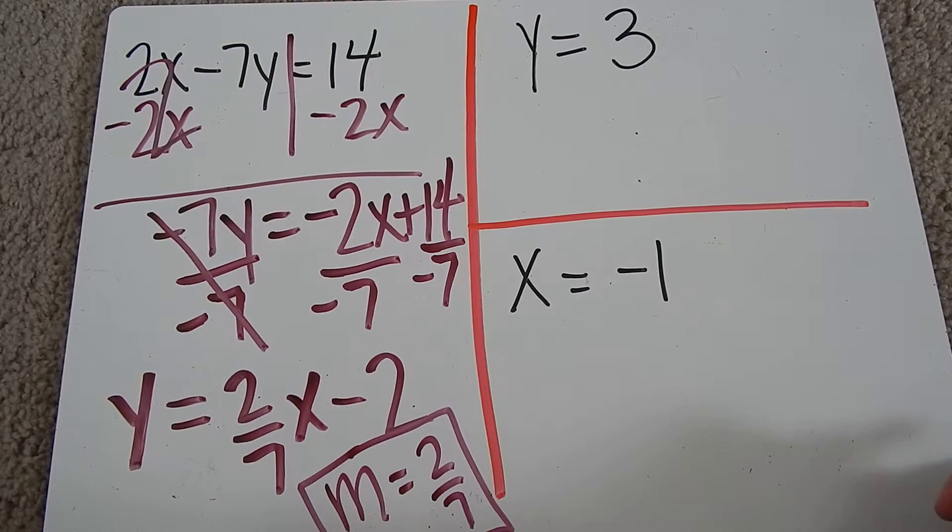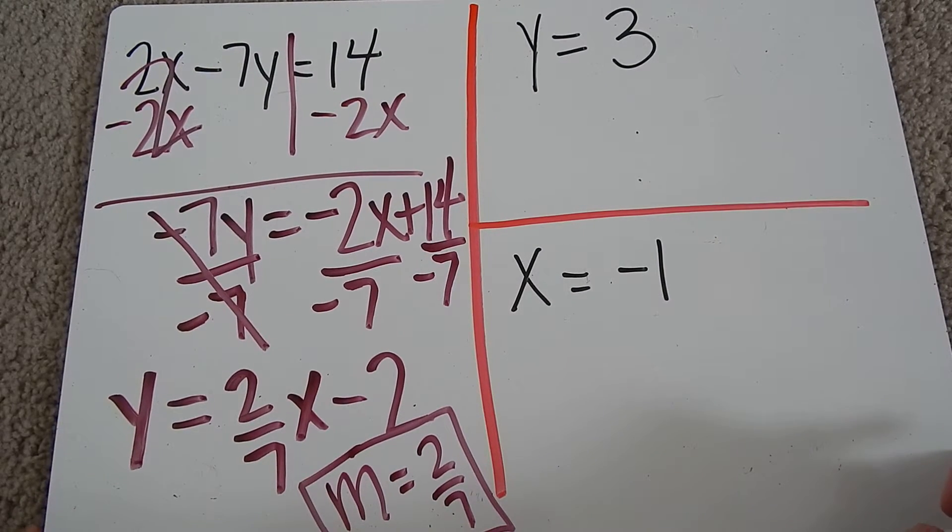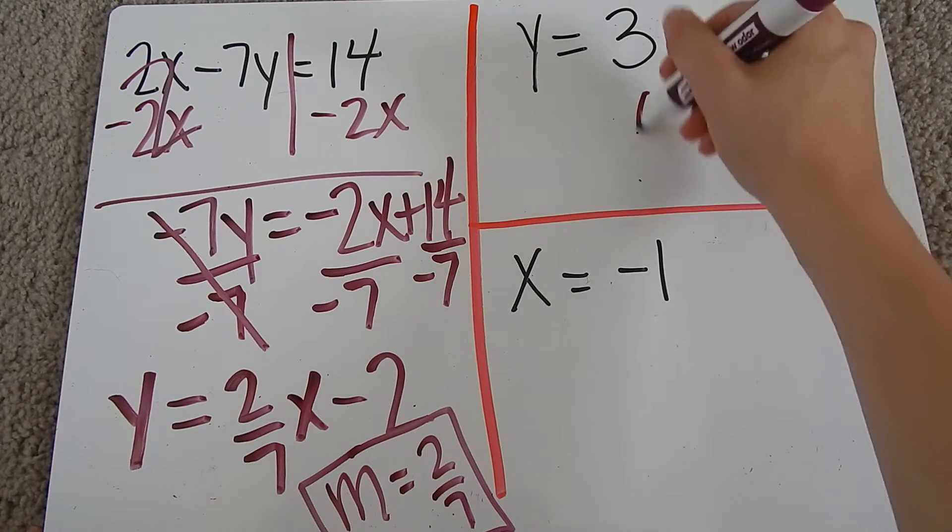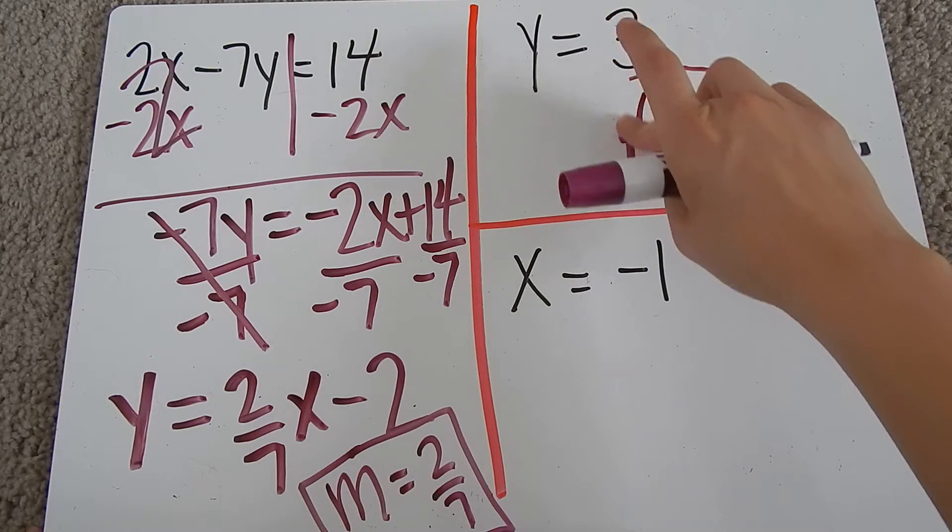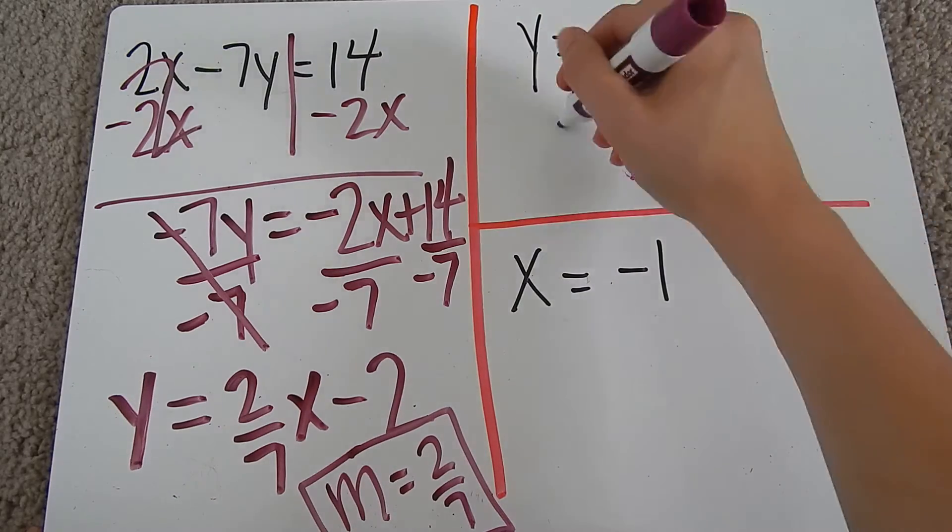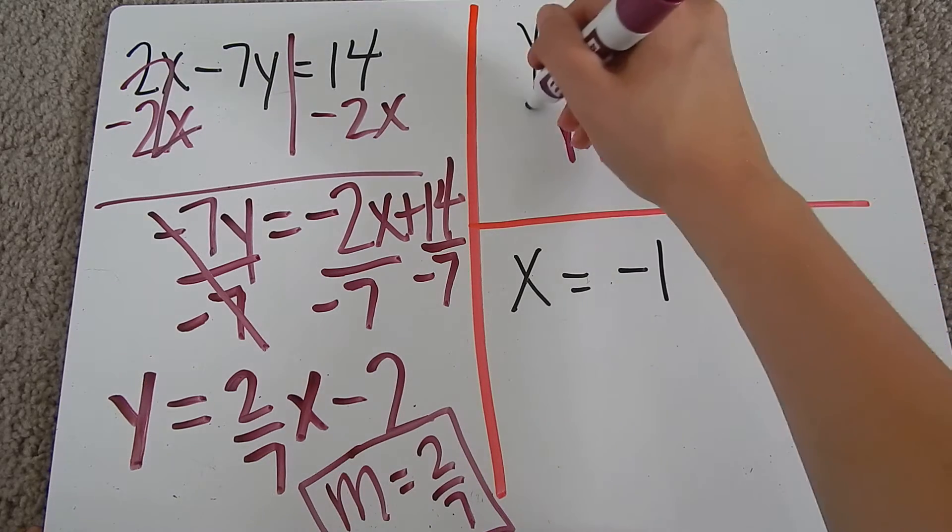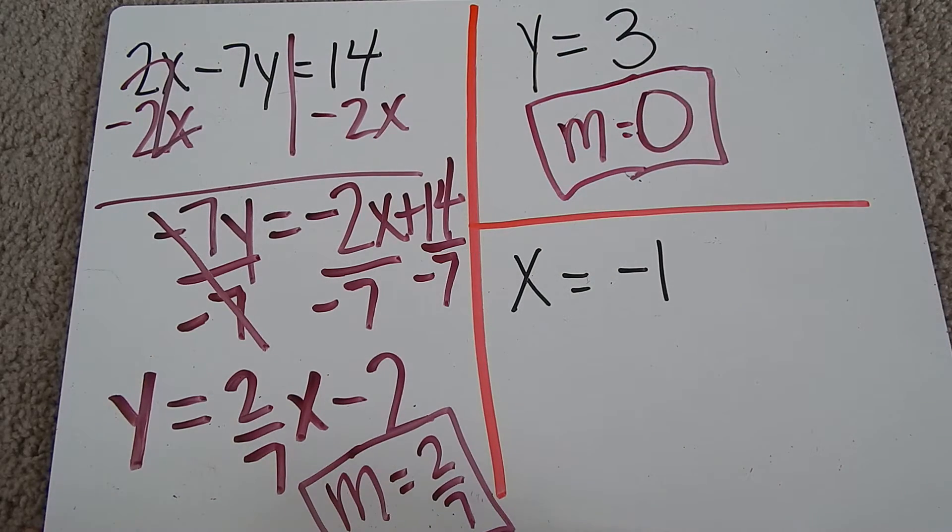Okay, my next example: y equals 3. Well, there is no x. If there's no x, then obviously it's going to be 0 because the x isn't there. So I should write m equals 0. If there is no x, then your slope is 0.